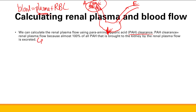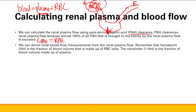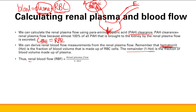We can derive renal blood flow from renal plasma flow using hematocrit. Hematocrit is the fraction of blood volume made up of red blood cells, so 1 minus hematocrit is the fraction made up of plasma. Thus: renal blood flow equals renal plasma flow divided by (1 minus hematocrit).